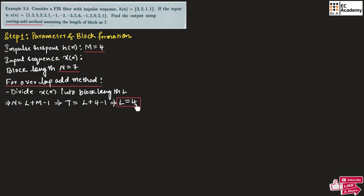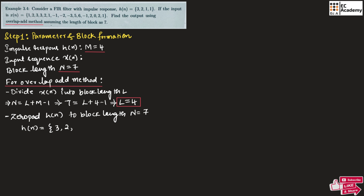So L is equal to 4 — this is very important. After this we will zero-pad h of n to block length N is equal to 7, which means we have h of n with length 4. For this we will be adding 3 zeros so that the length of h of n becomes 7. So we will get h of n is equal to 3, 2, 1, 1, 0, 0, 0. So this is h of n for our calculation.